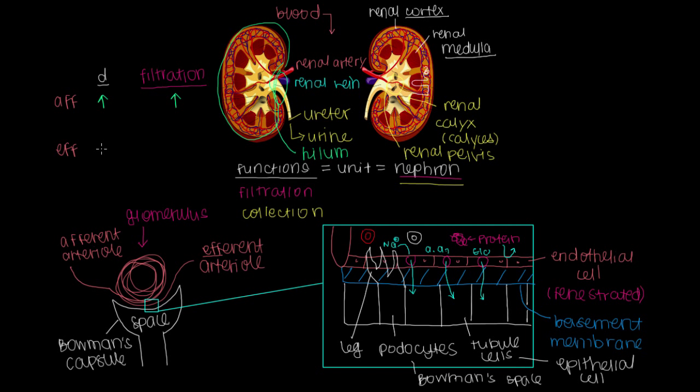Now what about if we did that with the efferent arteriole? Let's say we increase the diameter of the efferent arteriole so there's space for more marathon runners to run away from this narrow street. Well, if we increase the diameter and allow people to leave, they're not going to stay around here for a long period of time. They're not going to be near these fenestrations, so our filtration rate will decrease because the blood is moving away from the place that it would be filtered.